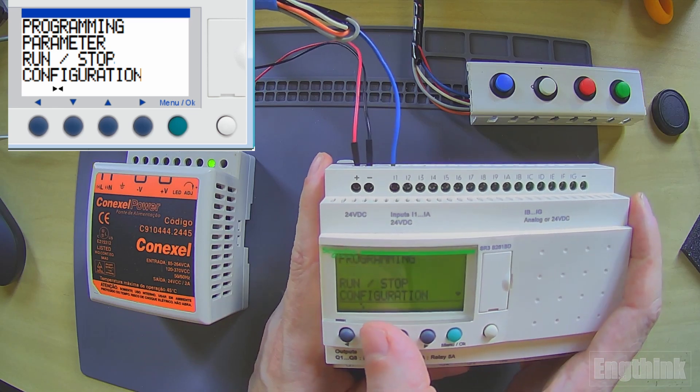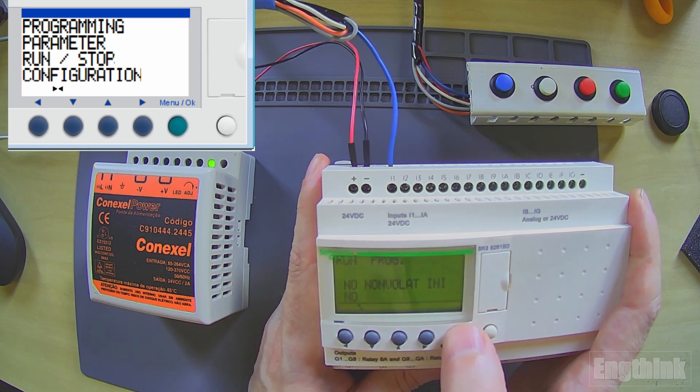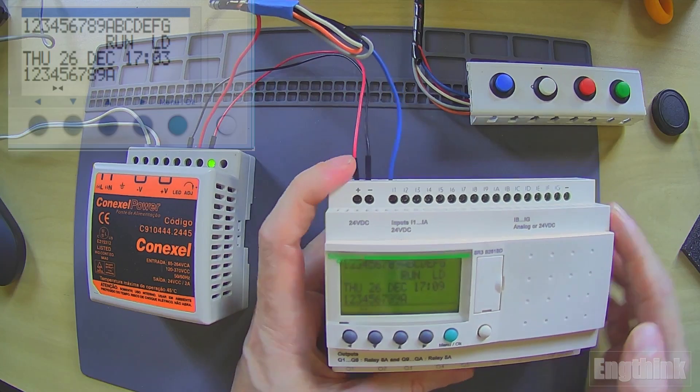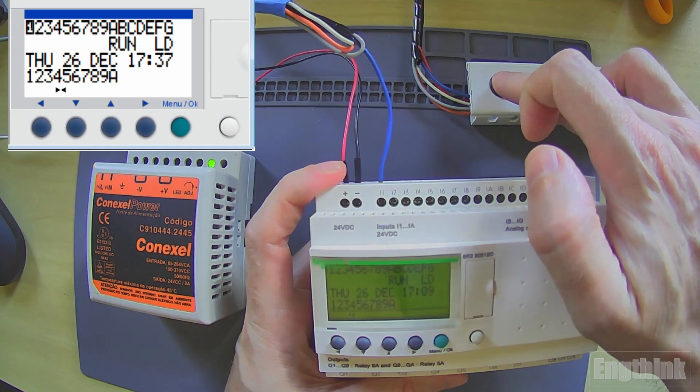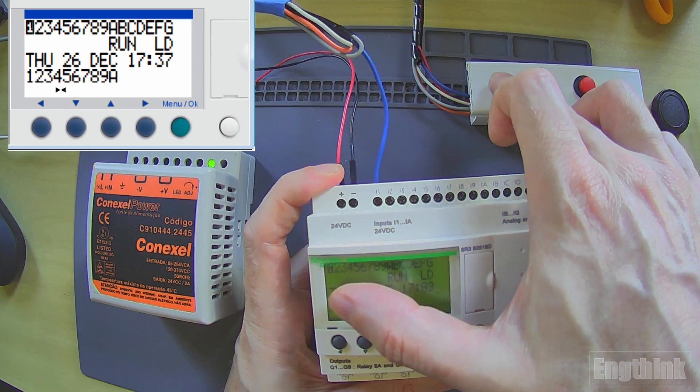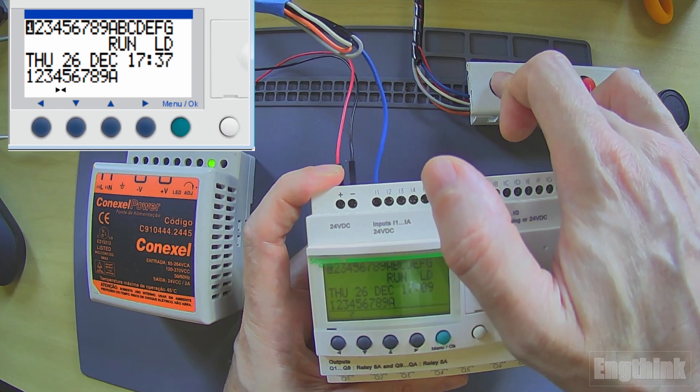Let's move to run mode and see what will happen. Basically it's in run mode. Let's try to press the button. As you can see, we have the activation of the digital input, but the output doesn't change.